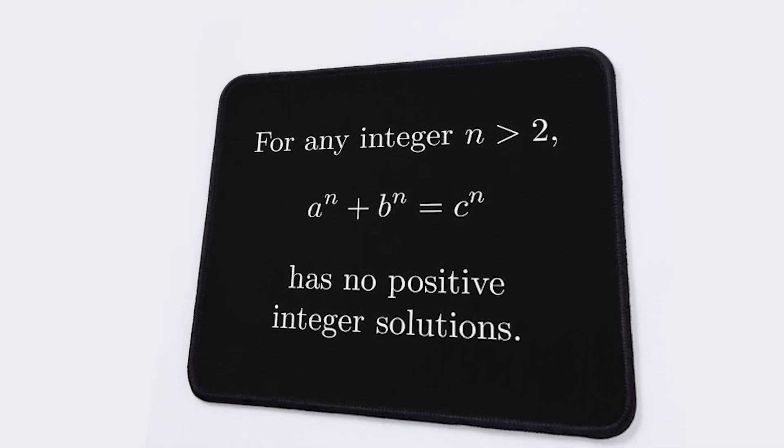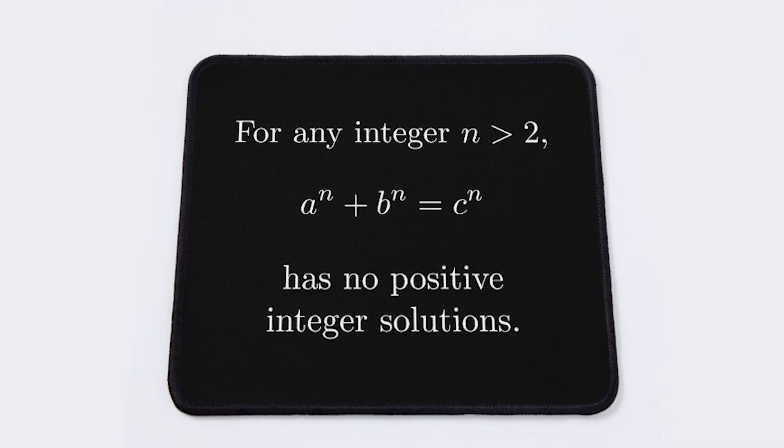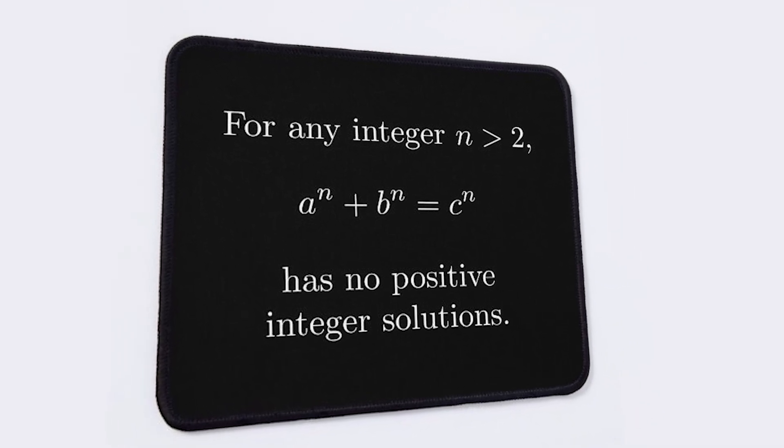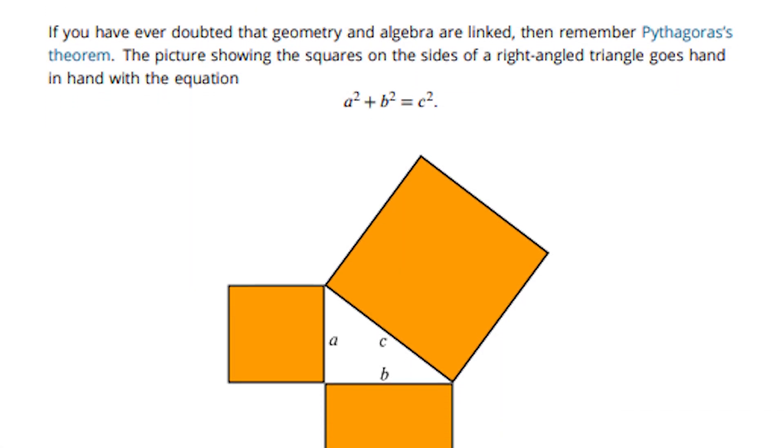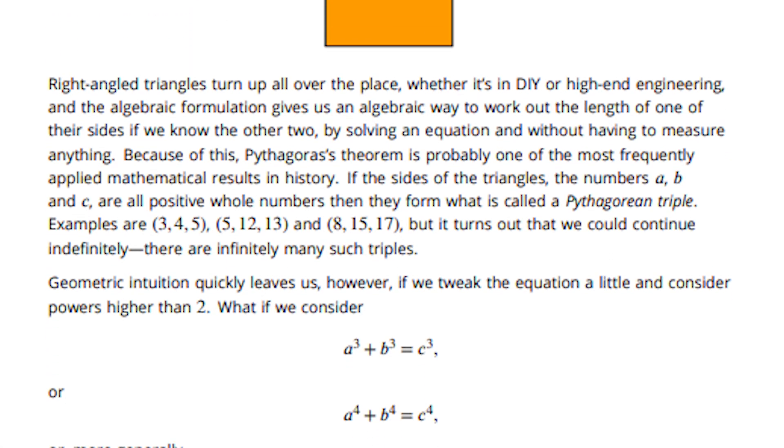This is known as Fermat's last theorem. The equation a to the n plus b to the n equals c to the n has no positive integer solutions as long as n is greater than 2. It is a fairly easy to understand theorem, however, proving it is not.